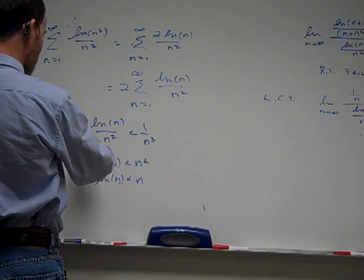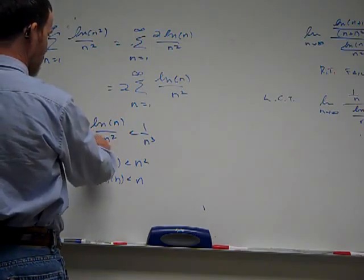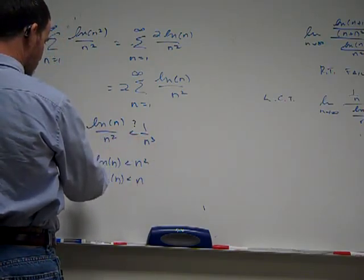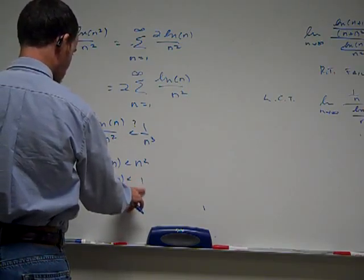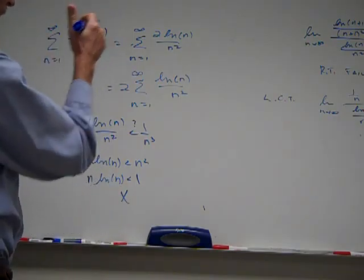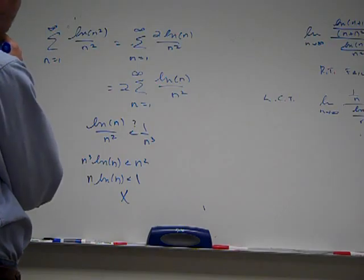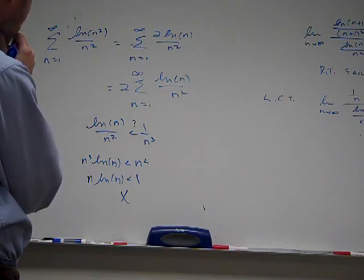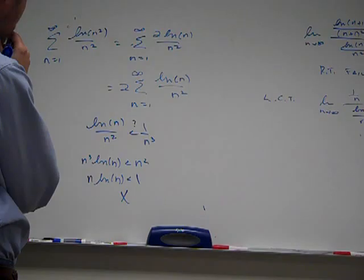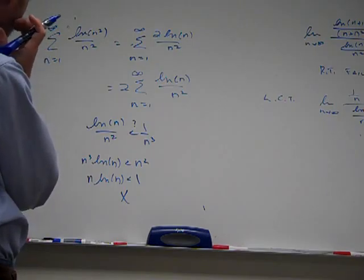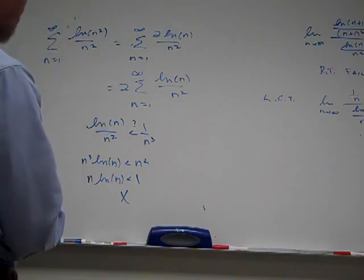Well, let's see what we did here. I'm trying a direct comparison test, and so LN of n over n squared, is it less than 1 over n cubed? If I multiply, I get this. Oh no, no. I ended up with an n over here, Ted, which is not true. So that fails miserably. We tried the ratio.